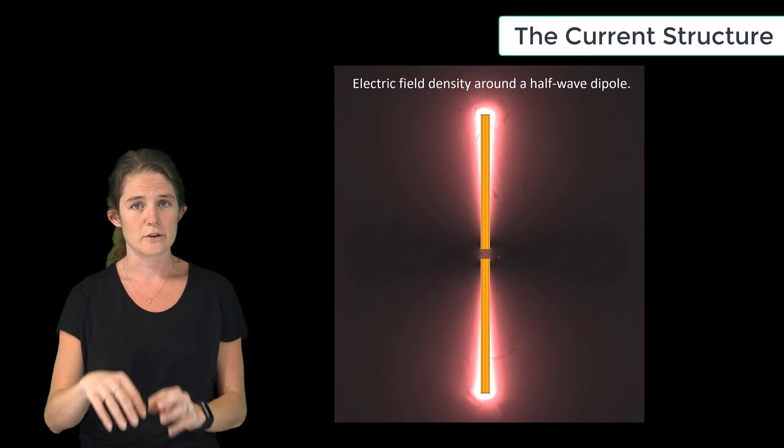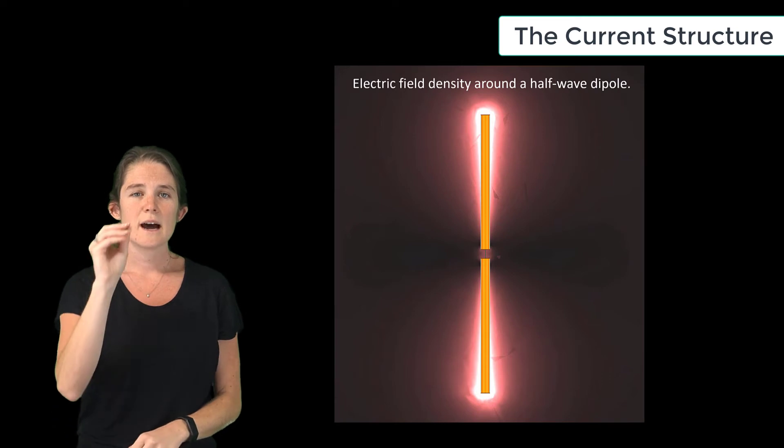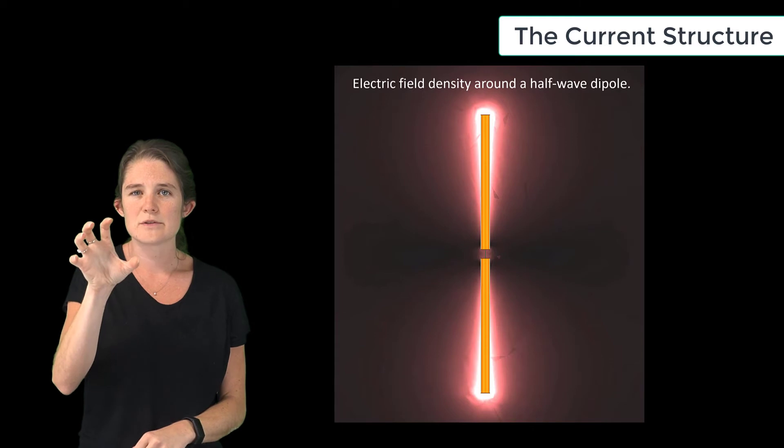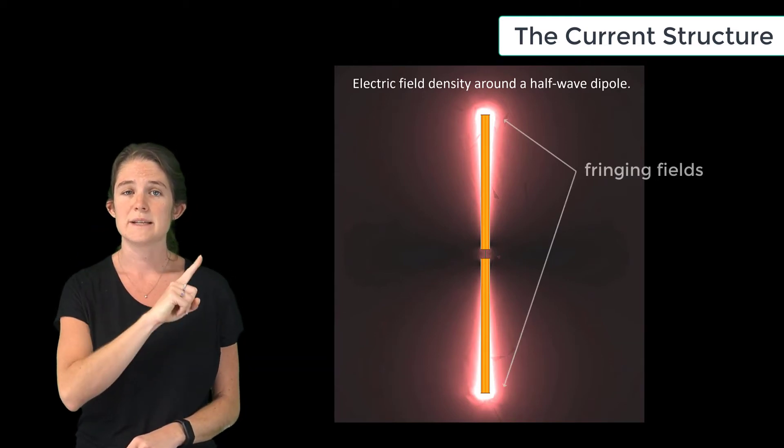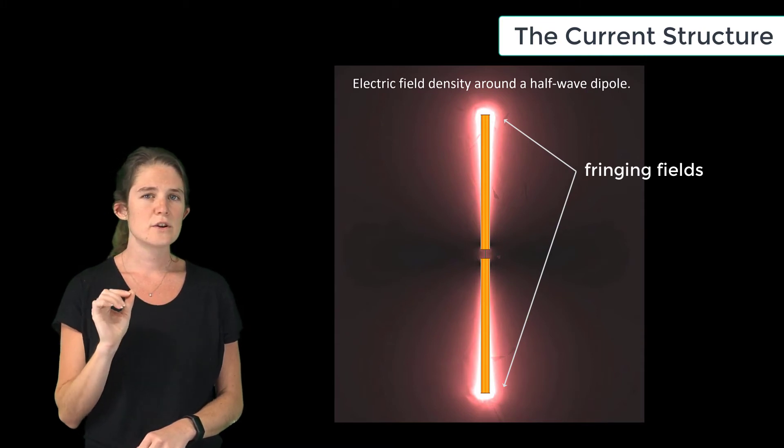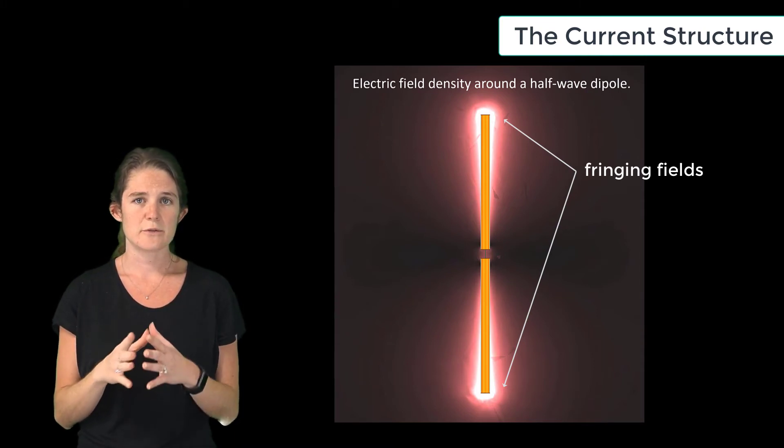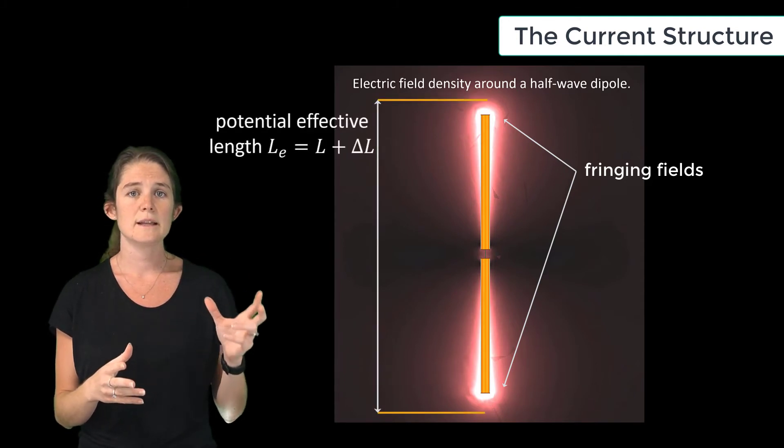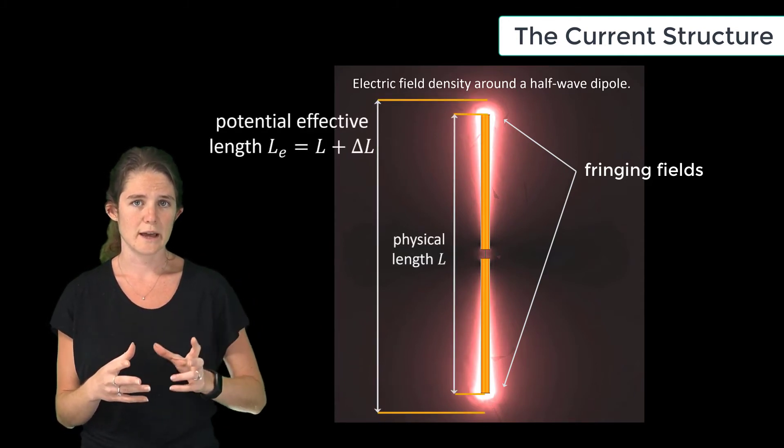This high charge concentration leads to high density fields and high amounts of reactive energy storage in the region surrounding the antenna ends. As seen here, these are known as fringing fields, and from the perspective of the current, they make the antenna appear slightly longer than its actual physical length.